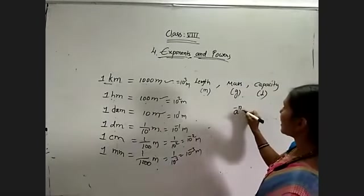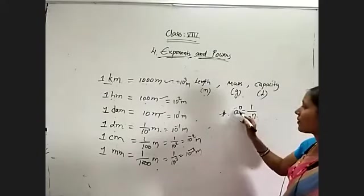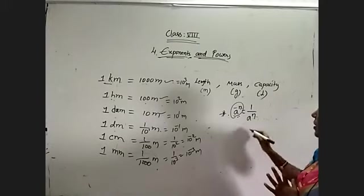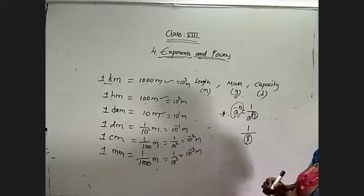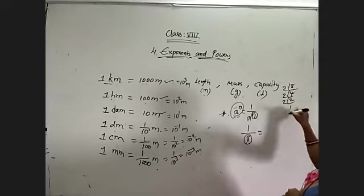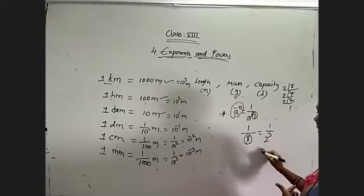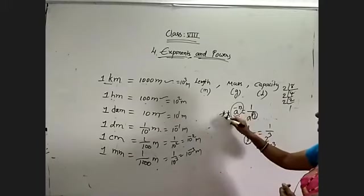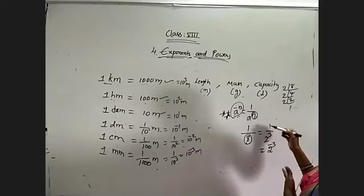This gives us the first law: a power minus n is equal to 1 by a power n. The inverse of any number is referred to as a to the power of minus n in exponential form. For example, 1 by 8 — write 8 in exponential form using prime factorization: 8 is 2 cubed, so 1 by 2 cube. By simplifying this inverse we get 2 to the power of minus 3. That's the general law: a to the power of minus n equals 1 by a power n.